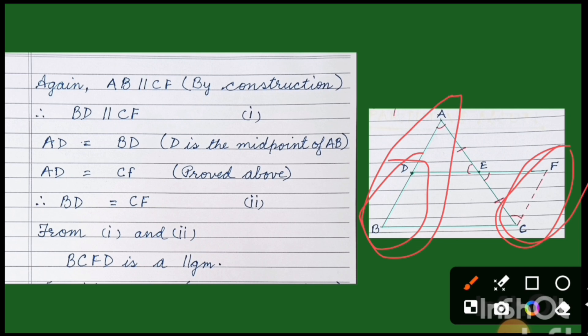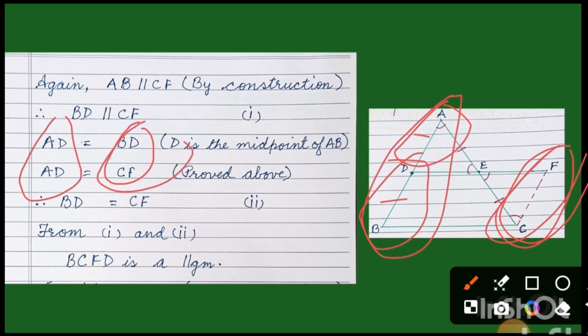AD is equal to BD because D is the midpoint of AB. We have also proved that AD is equal to CF because these triangles are congruent. Therefore BD is equal to CF, since AD equals BD and AD equals CF.